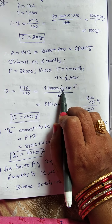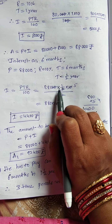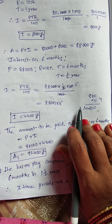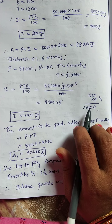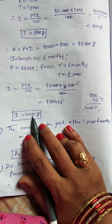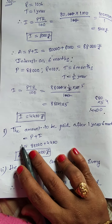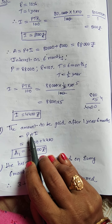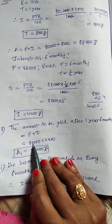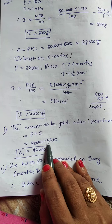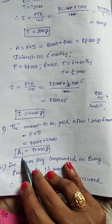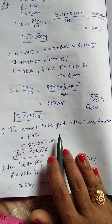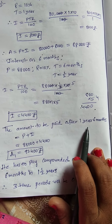After cancellation, the interest for the half year comes to 4,400 rupees. The total amount to be paid after one and a half years (compounded annually) is: A1 = 88,000 + 4,400 = 92,400 rupees.